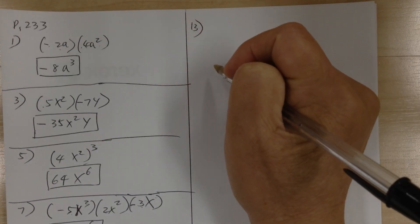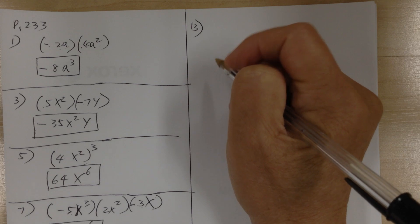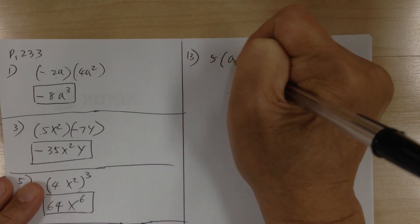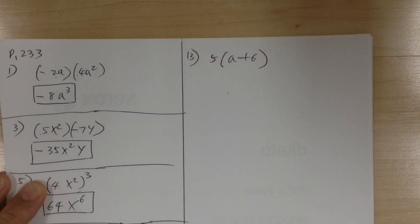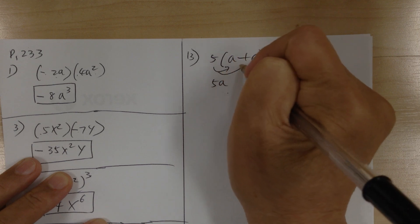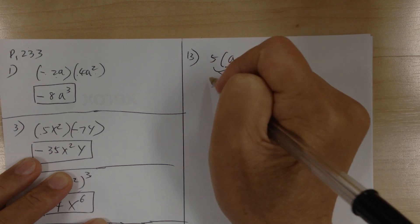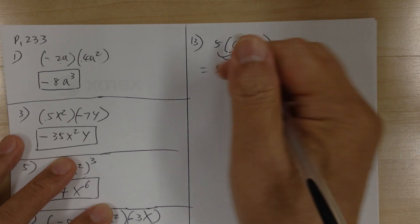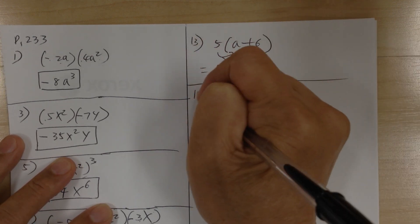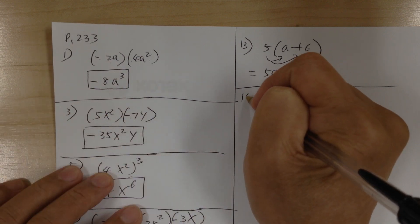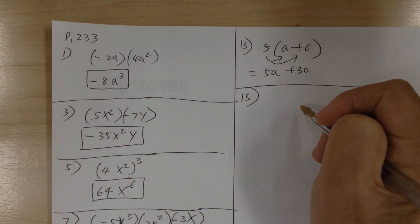Number 13. You have 5 times (a plus 6). This one you have to use the distributive property — just distribute, so it becomes 5a plus 30. Now this one has multiple terms, so you can just leave it; you don't have to box it. When you have a single number or term, you can box it, but when you have a lot of stuff, just leave it.